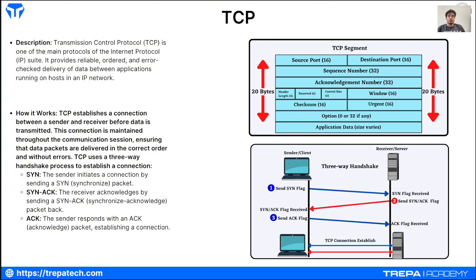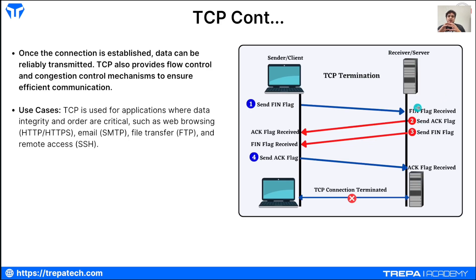Next we're going to talk about TCP, the layer 4 control protocol. The Transmission Control Protocol is a reliable way to send traffic. We establish TCP data channels after the three-way handshake: the sender sends a SYN flag, the server replies with a SYN-ACK initiating a TCP connection back and acknowledging the sender's SYN, then the sender sends just an ACK back. Now we have that TCP data channel established and can start sending, receiving, uploading, and downloading traffic.